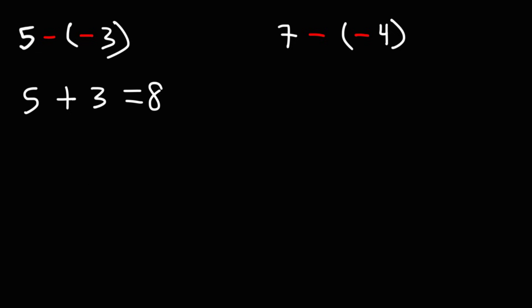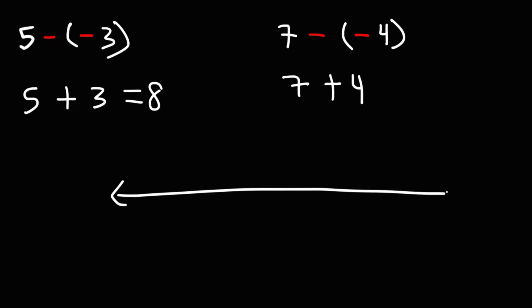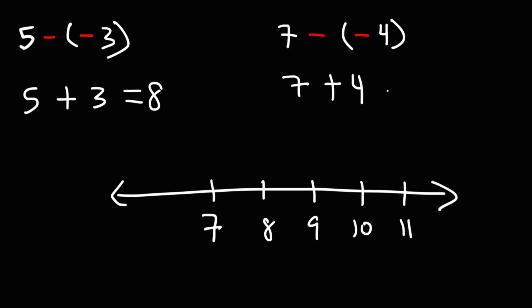For the next one we have 7 minus negative 4. So we have two negative signs next to each other — a negative times a negative is a positive. So this is 7 plus 4. If we start with 7 and add 4 units to it, we need to travel 4 units to the right: 1, 2, 3, 4. So this will take us to 11. 7 plus 4 is 11.